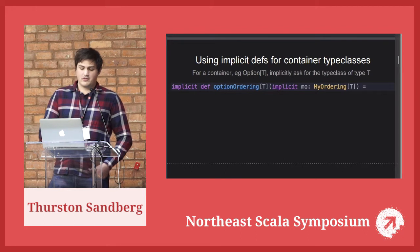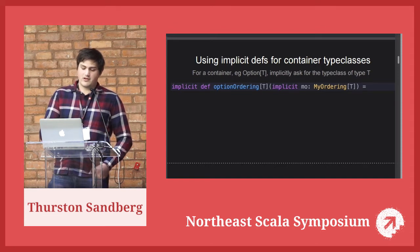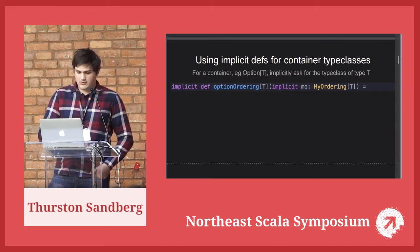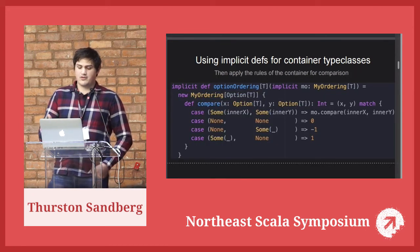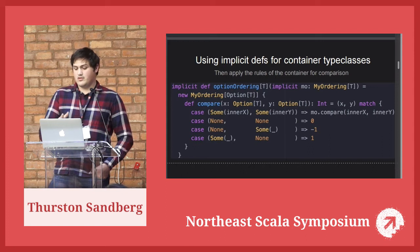Let's look at option specifically. It's an implicit function that implicitly asks for the MyOrdering instance of the underlying type T, giving us a means of comparing the type we really care about. The mechanics specific to options: if both options are Some, rely on MyOrdering[T] to compare the inner values; if both are None, return zero — they're equivalent; if one is None and the other is Some, None is less than Some.